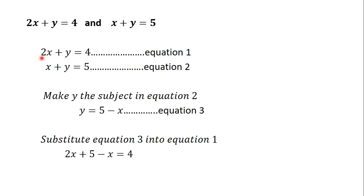For equation 1, we have 2x plus y is equal to 4. Now 2x is already there, but y is now 5 minus x. So I'll replace y with 5 minus x. You have 2x plus, instead of y, it's now 5 minus x, is equal to 4. Make sure that after you've made y the subject in equation 2, you don't substitute it back into equation 2. You substitute it into the other equation, which is equation 1, and that is exactly what I've done here.